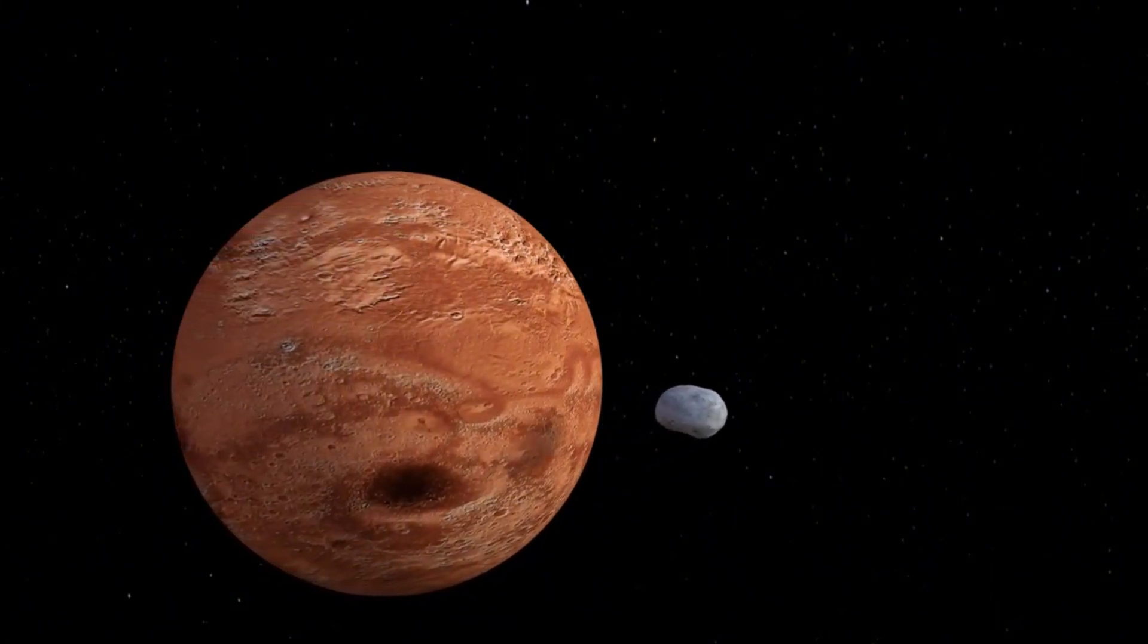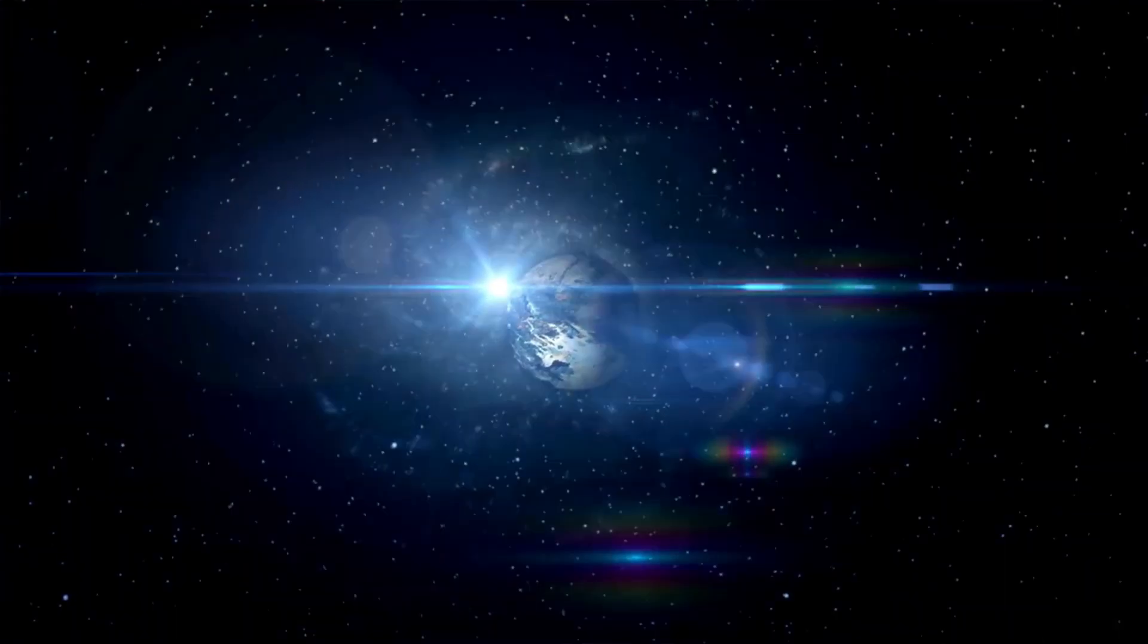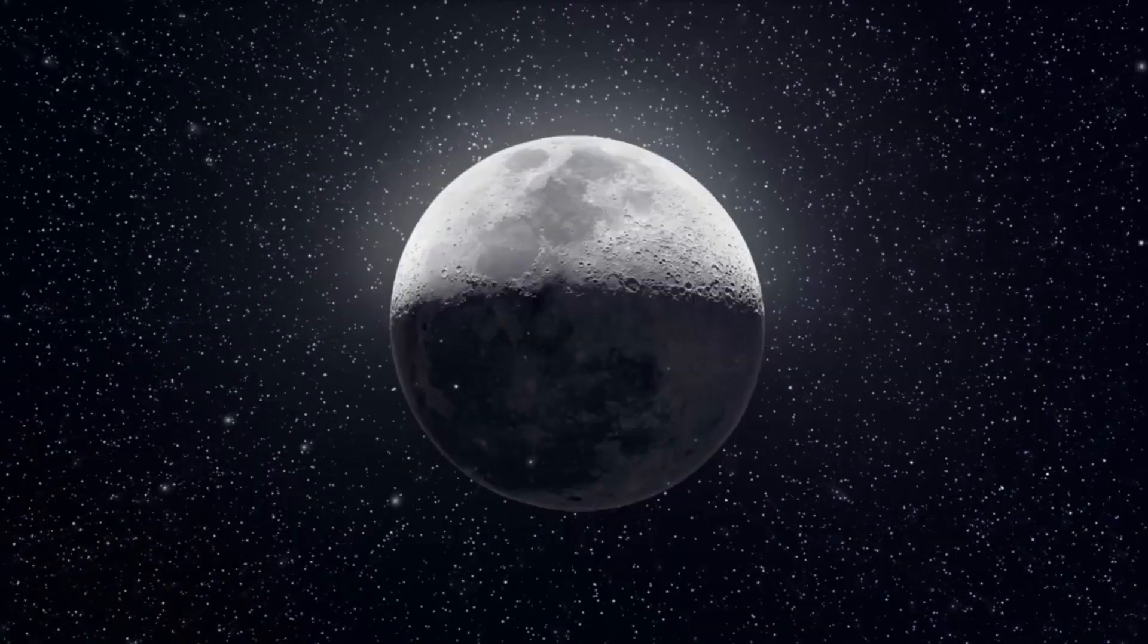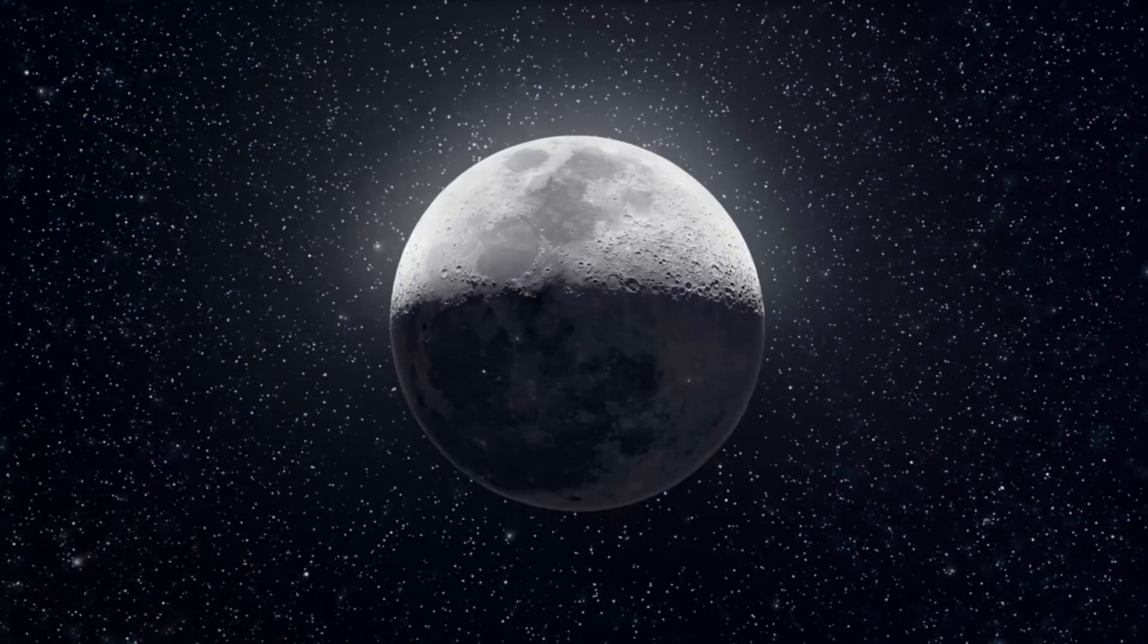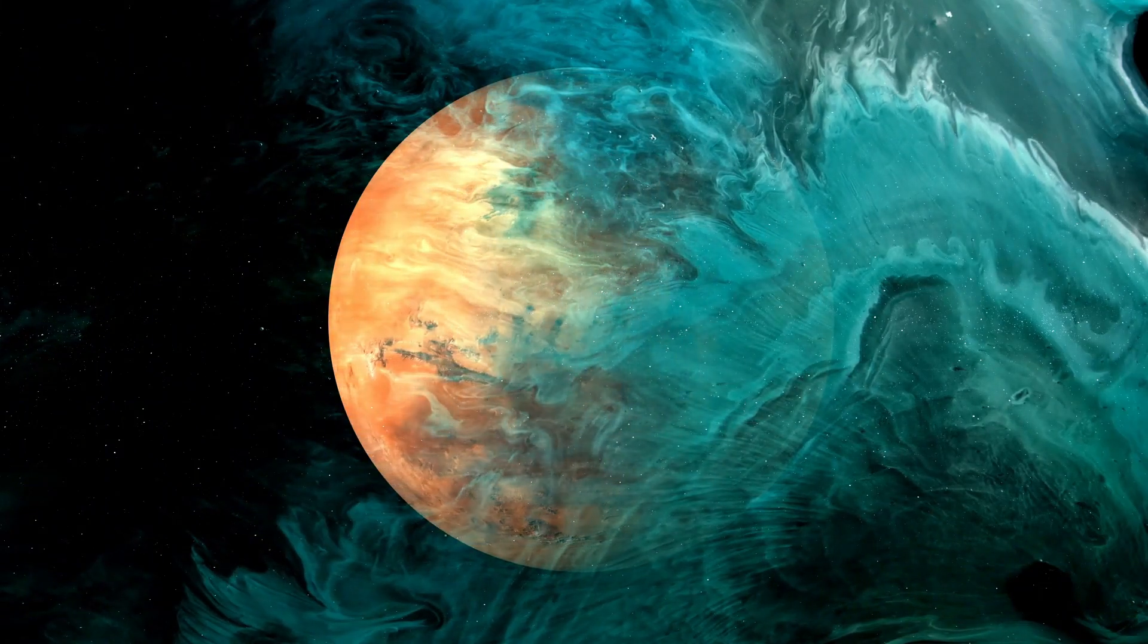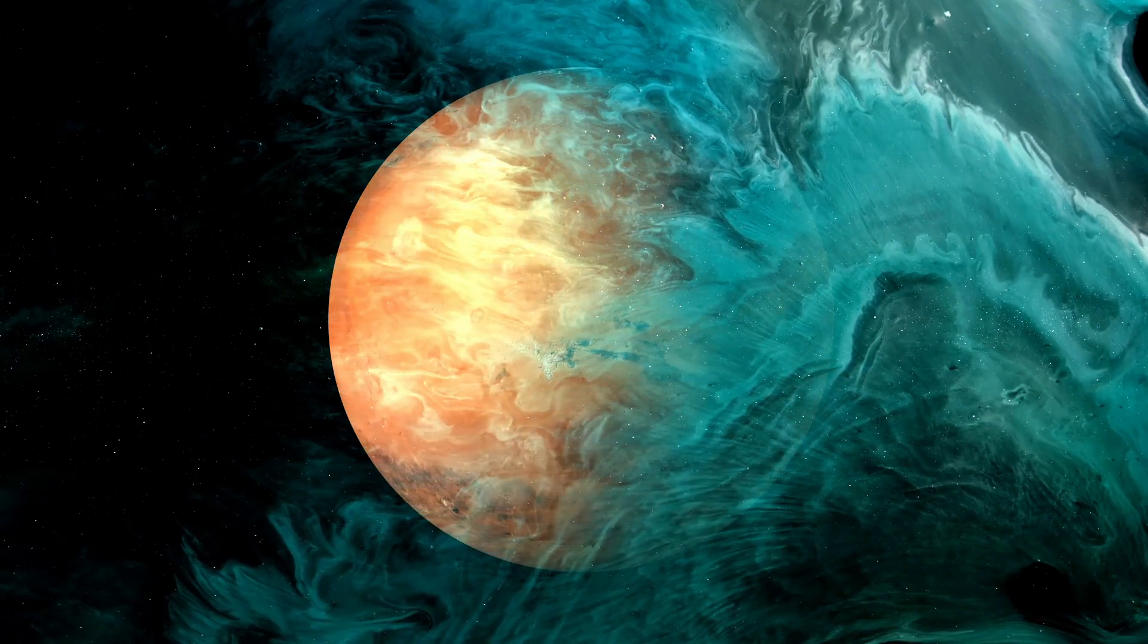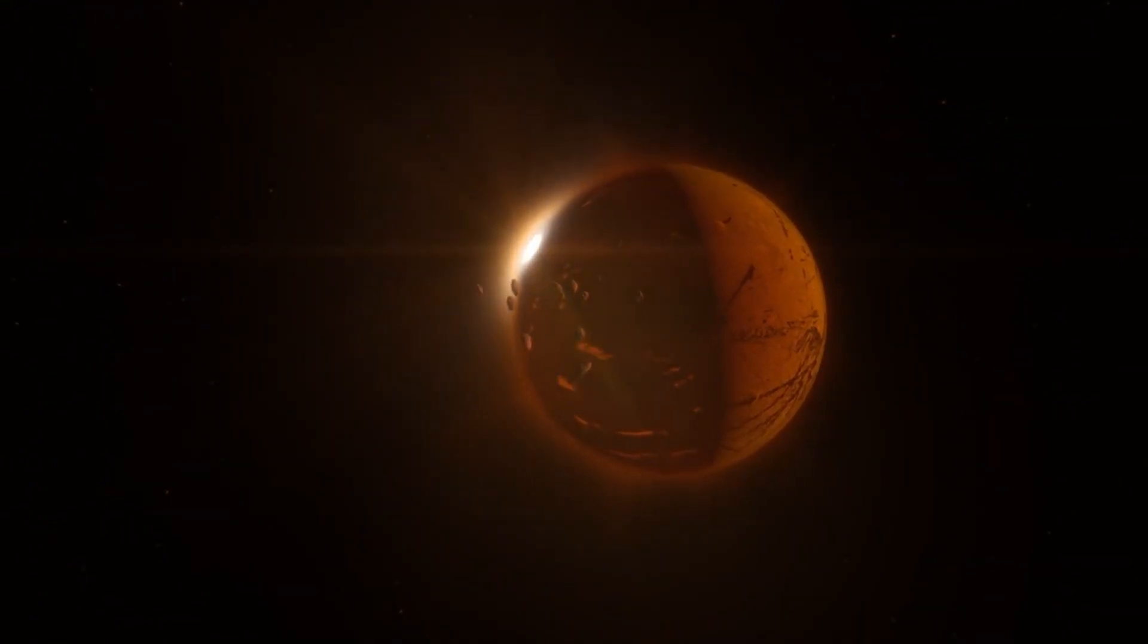Recent exploration proposes that Pluto may have a subsurface ocean, a finding that could adjust how we might interpret its geography and potential for facilitating life. Information from the New Horizons mission showed that a few regions of Pluto's surface, for example, the icy mountains, might be made out of water ice, which acts uniquely in contrast to regular rock under low temperatures. This disclosure welcomes further investigation into the chance of fluid water, bringing up interesting issues about the potential for life even in such outrageous conditions.